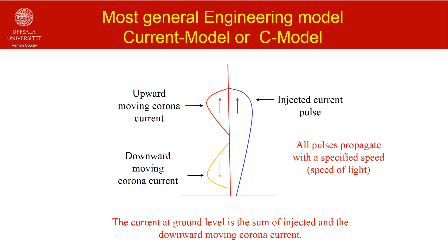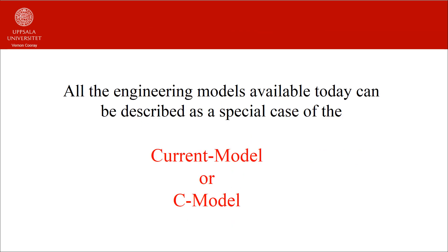Let us call this most general engineering return stroke model the current model or C model. In the model, we have the injected current at the channel base. Moreover, the corona current at any point on the channel will have two identical components, each equal to half of the corona current, one part travelling upwards and the other part travelling downwards. All the current pulses travel along the channel with the speed of light. This is the mother of all engineering return stroke models. All the engineering models available today can be extracted from this more general current model or C model.